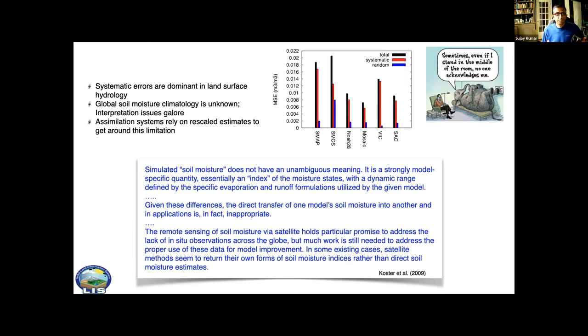This is to a large extent in the soil moisture world because we don't know the global soil moisture climatology and as you heard in talks earlier we rely on rescaled estimates to get around this limitation, essentially ignoring that bias piece.